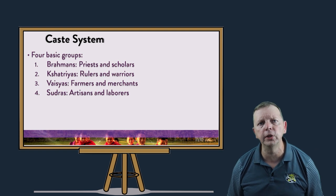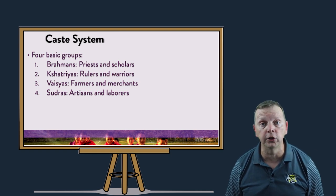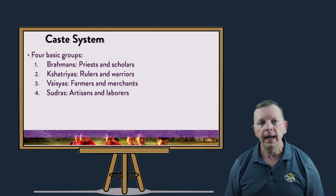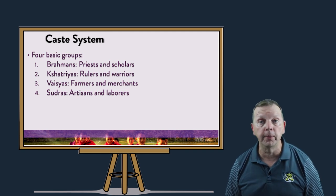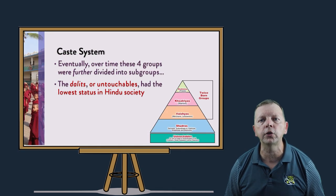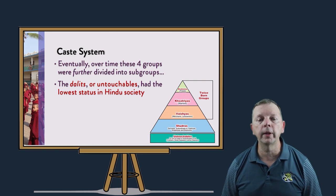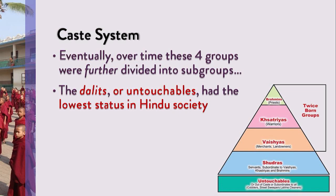Now, Hinduism greatly influenced Indian culture through the caste system, which divided society into four basic groups. At the top were the Brahmins, who were the priests and the scholars. At the bottom were the Sudras, who were the common laborers and artists. And below even the Sudras were the Dalits, also known as the Untouchables. These were the people that those in the higher classes wanted to have no contact with. The Dalits were those who did the jobs the rest of society didn't want to do — they cleaned the streets, they worked with the sewage, they were the undertakers, essentially doing all the dirty jobs no one else wanted to do.